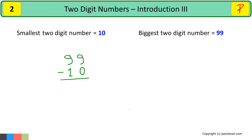First, we subtract the numbers at the ones place — this is the ones place and this is the tens place. So, 9 minus 0 is 9. Then 9 minus 1 is 8. The result is 89.